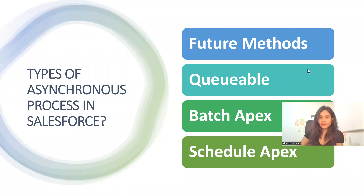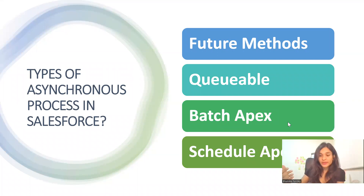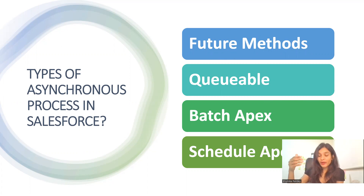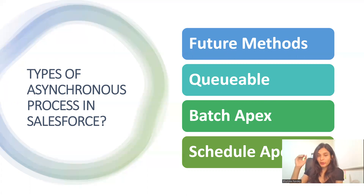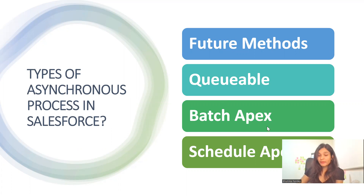In Salesforce there are four types of asynchronous processes available: Future Methods, Queueable Apex, Batch Apex, and Scheduled Apex. In the next videos I'll make a session on each topic — discussing what they are, use cases, how to write the code, and how it executes — so you'll have a very clear picture of each process.